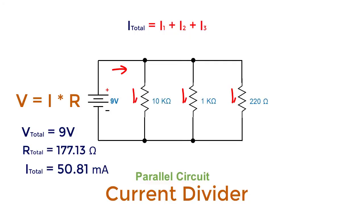If we want to know the individual current that flows through each branch, we use the same formula V is equal to IR. The current through the 10 kilo ohm resistor is 9 volts divided by 10 kilo ohm, equal to 0.9 milliampere. The current through the 1 kilo ohm resistor is 9 volts divided by 1 kilo ohm, equal to 9 milliampere. The current through the 220 ohm resistor is 9 volts divided by 220 ohm, equal to 40.9 milliampere. Adding these three individual branch currents produces a total current of 50.81 milliampere.